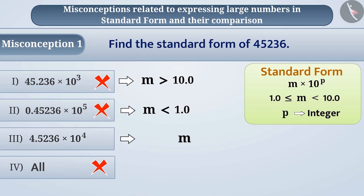In option 3, the value of m is greater than 1.0 and smaller than 10.0, and the value of p is 4, which is an integer. Hence, this is the standard form of the given number.